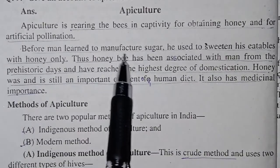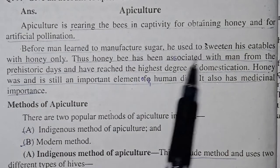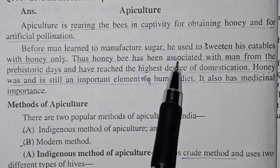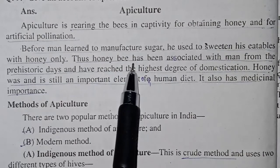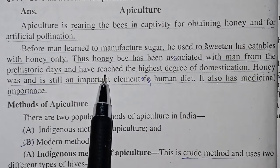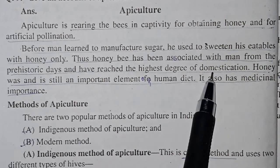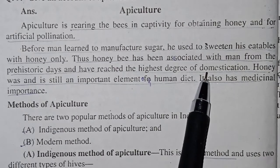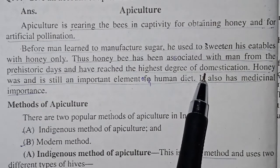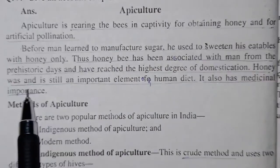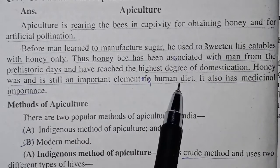When man did not have sugar, he used to sweeten his food with honey only. Thus, honey bee has been associated with man from the prehistoric days and have reached the highest degree of domestication.